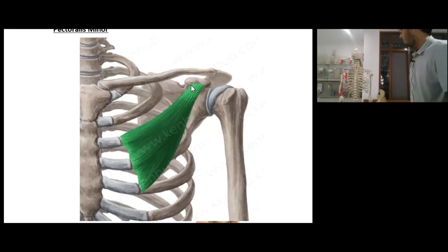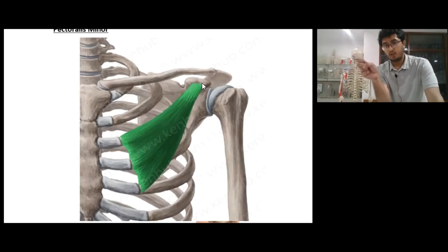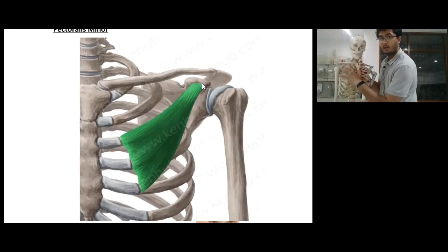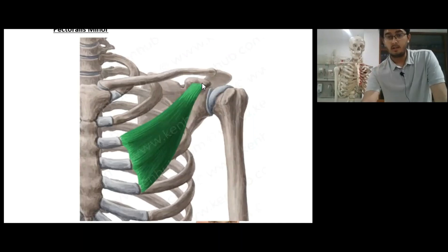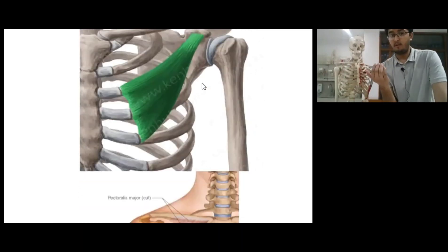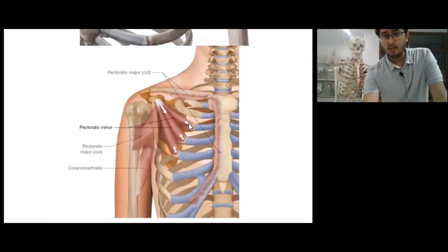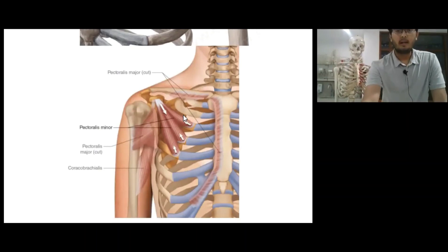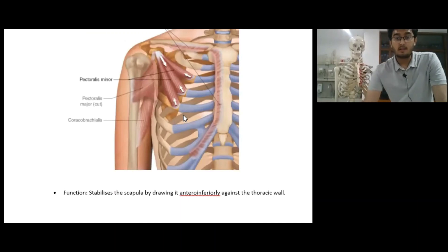The pectoralis minor originates from the third, fourth, and fifth ribs and inserts at the coracoid process. When it shortens, it brings the scapula towards itself — it is stabilizing the scapula on the rib cage, moving the scapula anteriorly and inferiorly against the thoracic wall. The function of pectoralis minor is that it stabilizes the scapula by drawing it anteroinferiorly against the thoracic wall. Its innervation is the medial pectoral nerve.